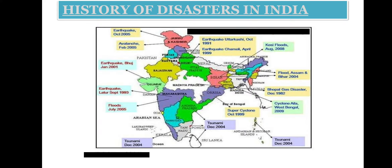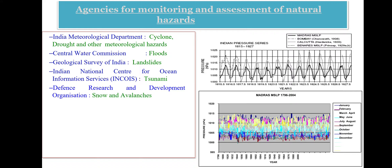Agencies for monitoring and assessment of natural hazards: Indian Meteorological Department is responsible for cyclone, drought and other meteorological hazards. The Central Water Commission Board is responsible for floods. The Geological Survey of India is responsible for landslides. For tsunami, the Indian National Centre for Ocean Information Service (INCOIS) is responsible. For snow and avalanches, the responsible department is the Defense Research and Development Organization.